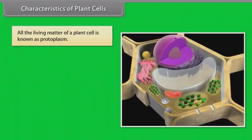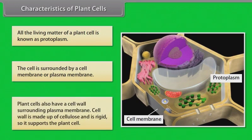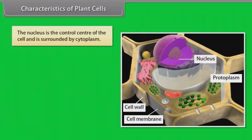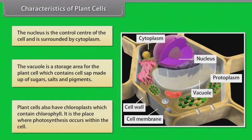All the living matter of a plant cell is known as protoplasm. The cell is surrounded by a cell membrane or plasma membrane. Plant cells also have a cell wall surrounding the plasma membrane. The cell wall is made up of cellulose and is rigid, so it supports the plant cell. The nucleus is the control center of the cell and is surrounded by cytoplasm. The vacuole is a storage area for the plant cell which contains cell sap made up of sugars, salts and pigments. Plant cells also have chloroplasts which contain chlorophyll — it is the place where photosynthesis occurs within the cell.